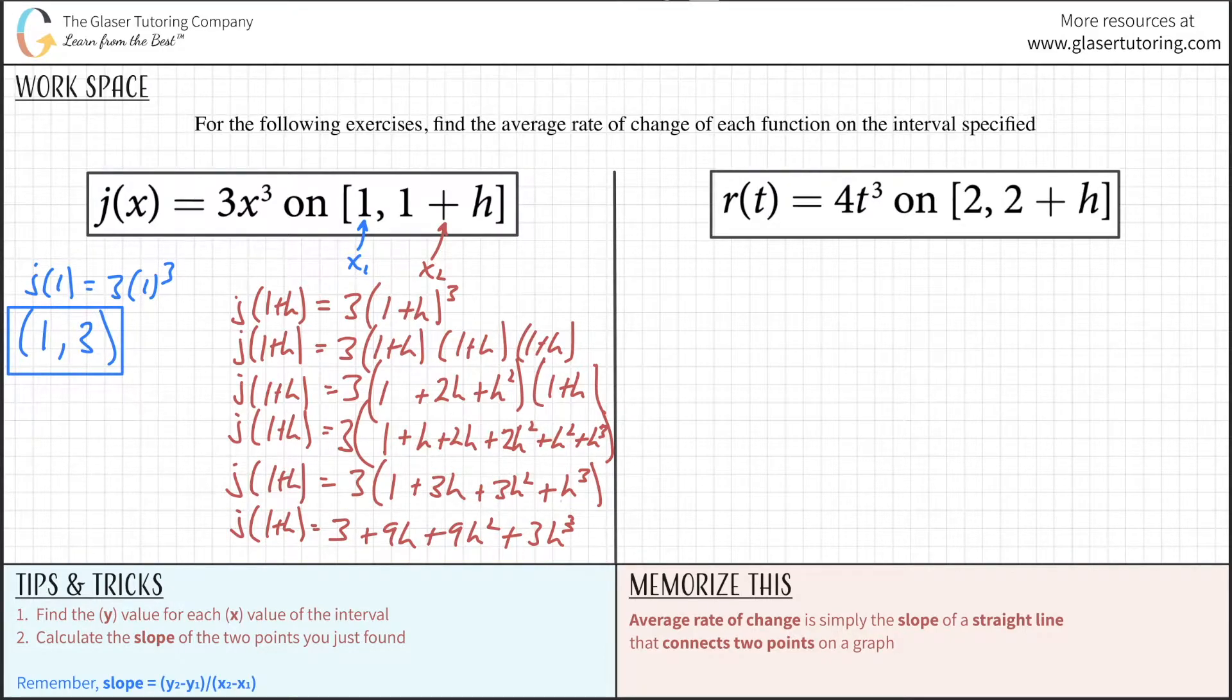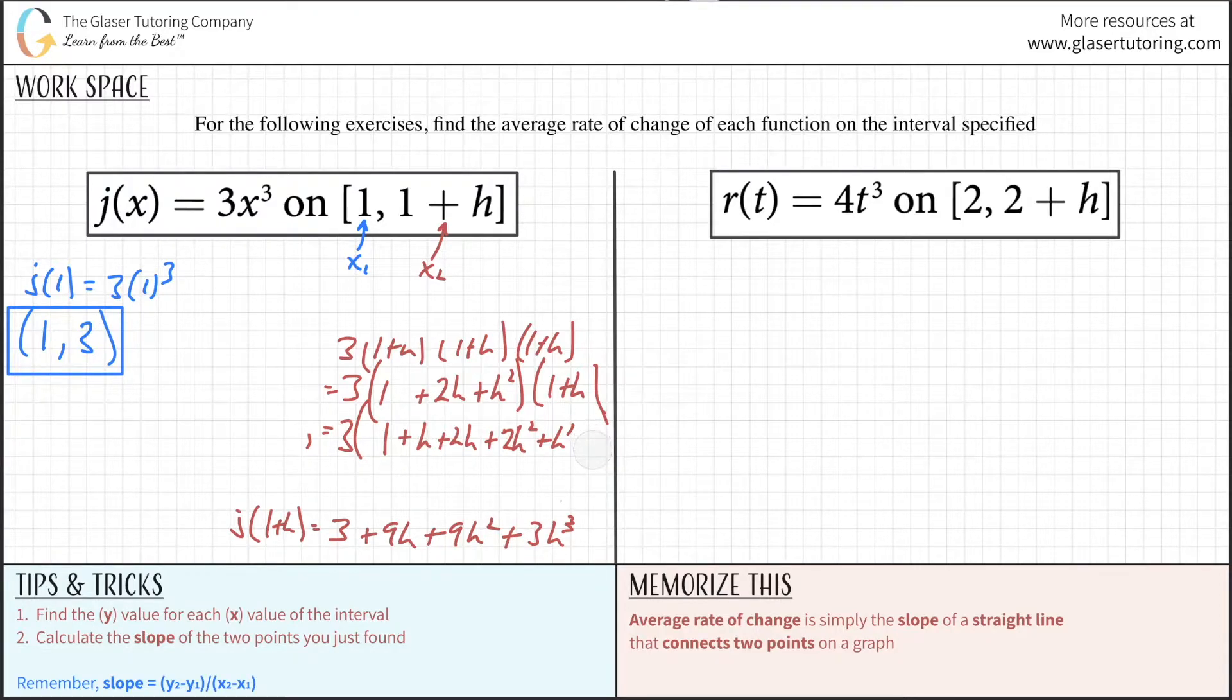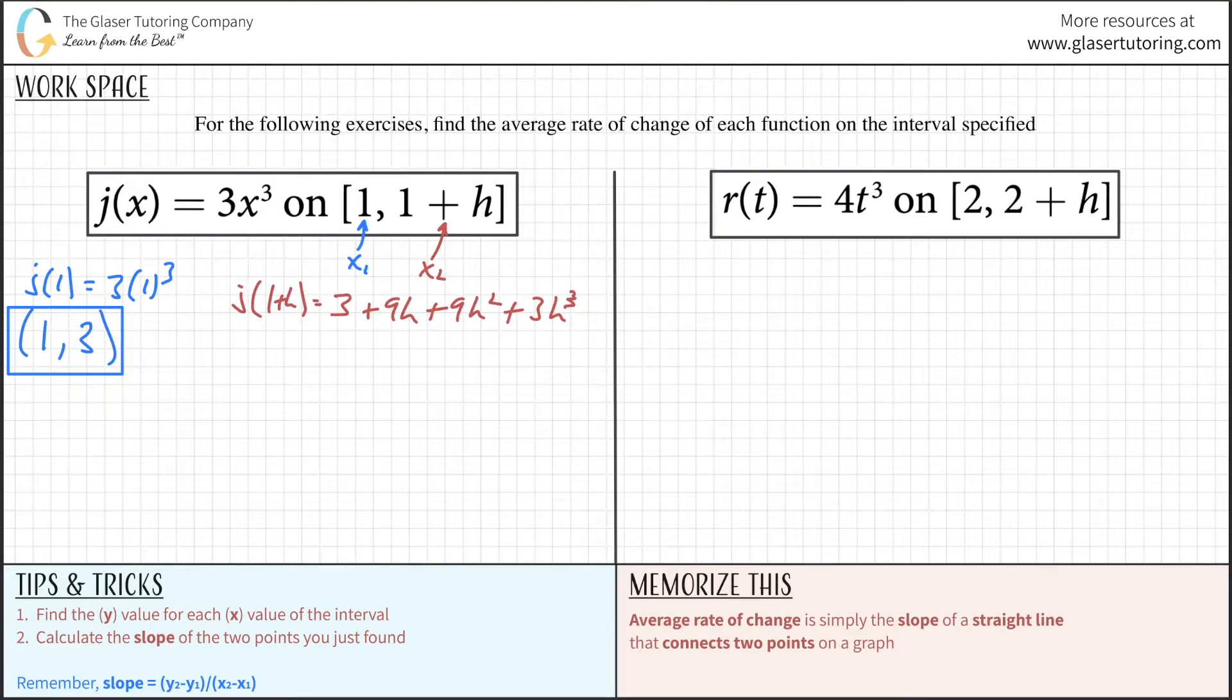Let's erase this algebra work and bring this up for more space. My coordinate now - this is the y value - the coordinate is 1 plus h comma (3 plus 9h plus 9h squared plus 3h cubed). It's not a nice number, but it's still the y value.